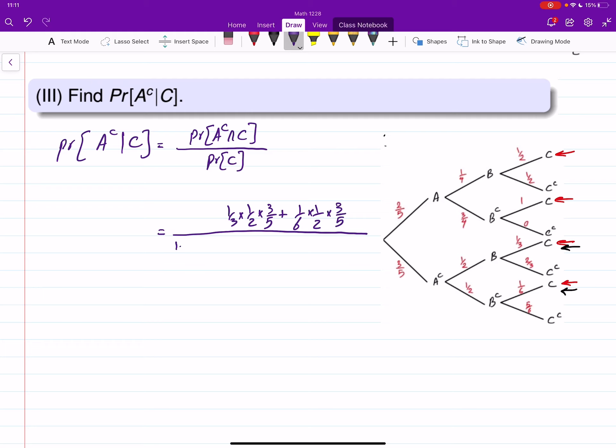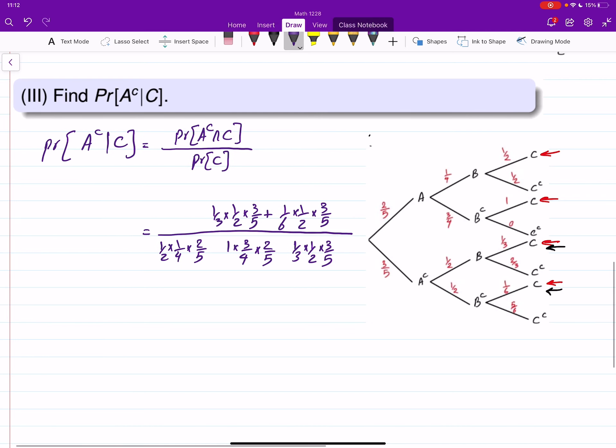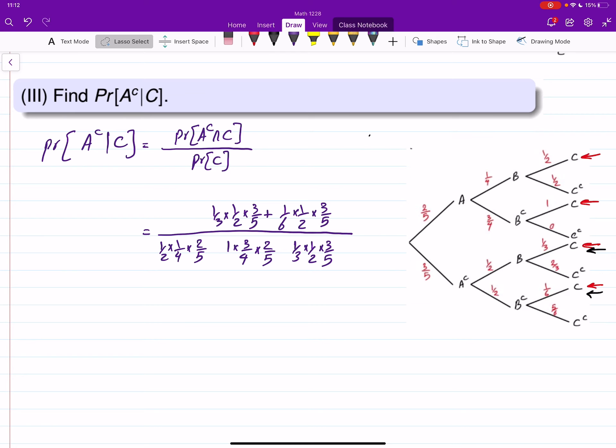For C, we have 1 half times 1 over 4 times 2 over 5. We have 1 third times 1 over 2 times 3 over 5. And the last one is 1 over 6 times 1 over 2 times 3 over 5.